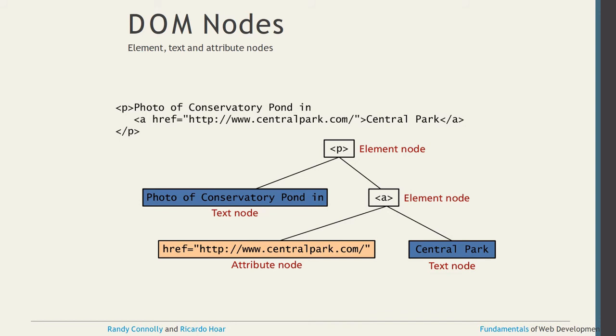For example, inside a paragraph there is some text and an anchor tag. The 'p' tag is an element node. The text displayed alongside it — 'photo of something' — is a text node. The anchor tag inside the paragraph is also an element node. The 'href' attribute of the anchor tag is an attribute node, and the displayed link text is a text node. This illustrates element nodes, text nodes, and attribute nodes clearly.